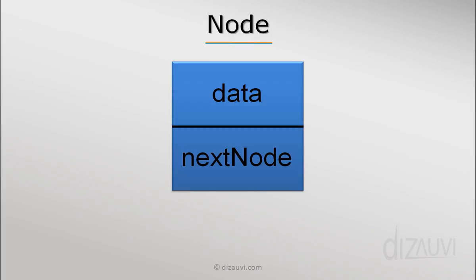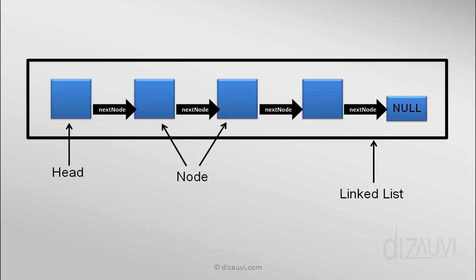That is, it points to the next node, and if it is the last element of the sequence, it points to null. So this whole structure is called a linked list.